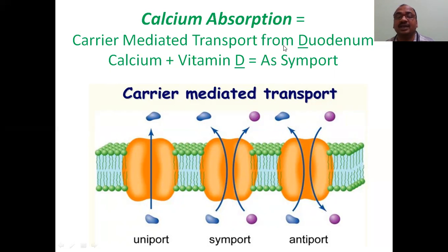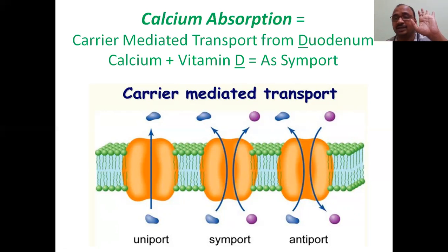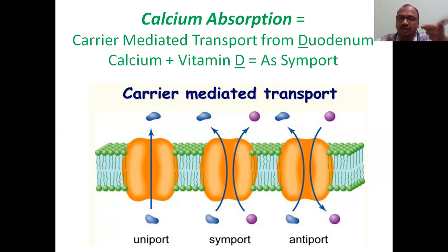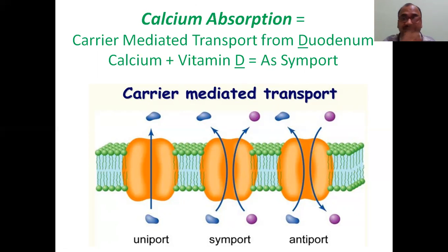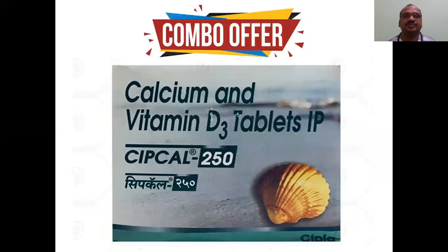Very important bit. This absorption takes place in the duodenum — vitamin D and duodenum both start with D, keep that in mind. Which part of the small intestine? The duodenum — that is also an important bit. They act as a symport. Antiport means opposite, uniport, symport, antiport — directions you have to know. Symport is our focus point.